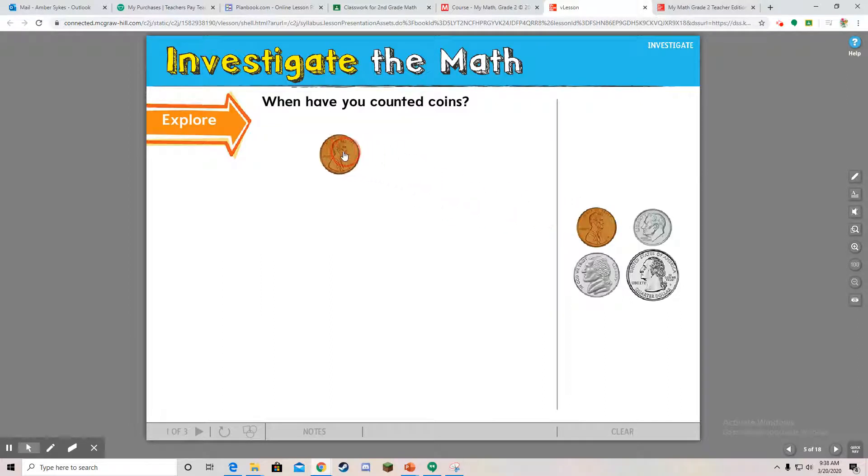Boys and girls, today in math we're reviewing coins from last week, so let's get started. The first coin we're talking about is Mr. Penny. How much is Mr. Penny worth? Well, Mr. Penny is worth one cent. What makes the penny unique is that unlike the rest of the coins, he is a brown color. He's made of copper and he is not a silver gray color like the other coins.